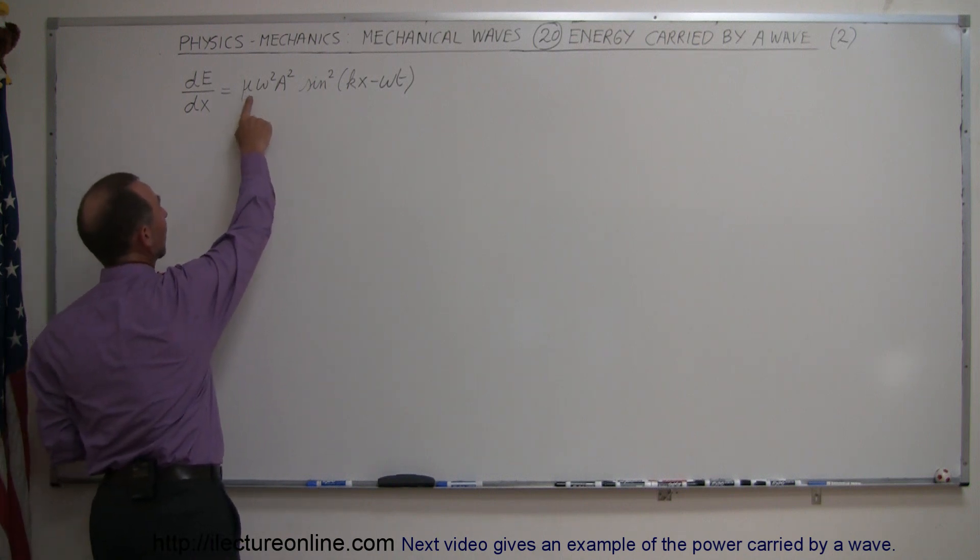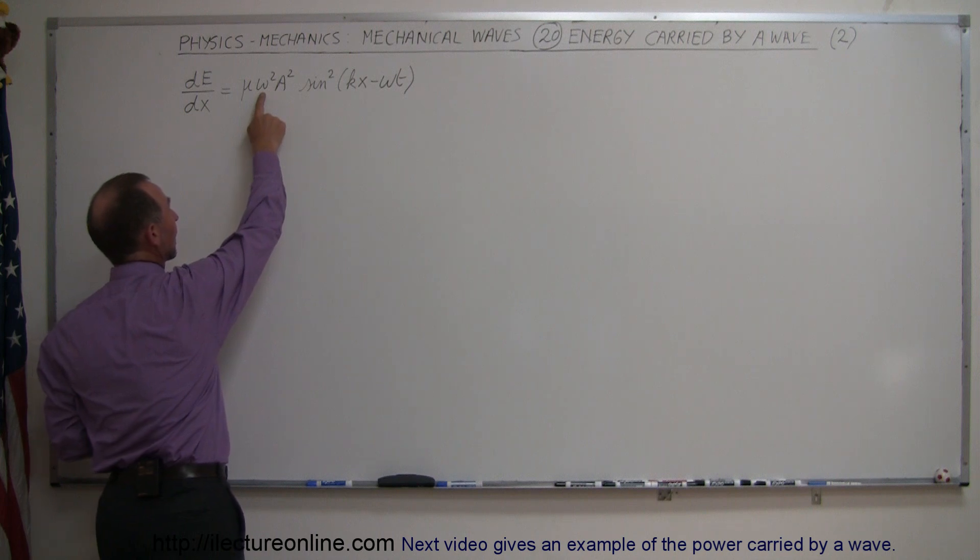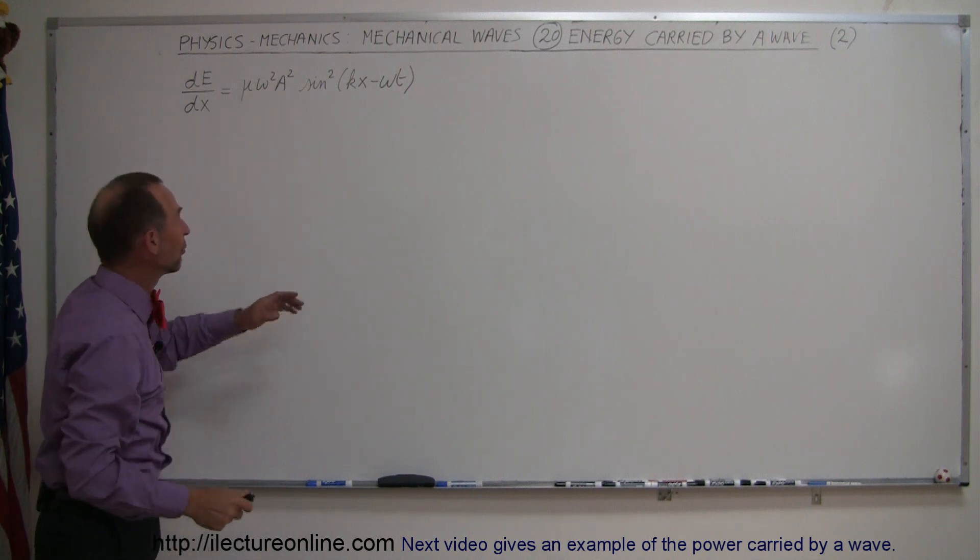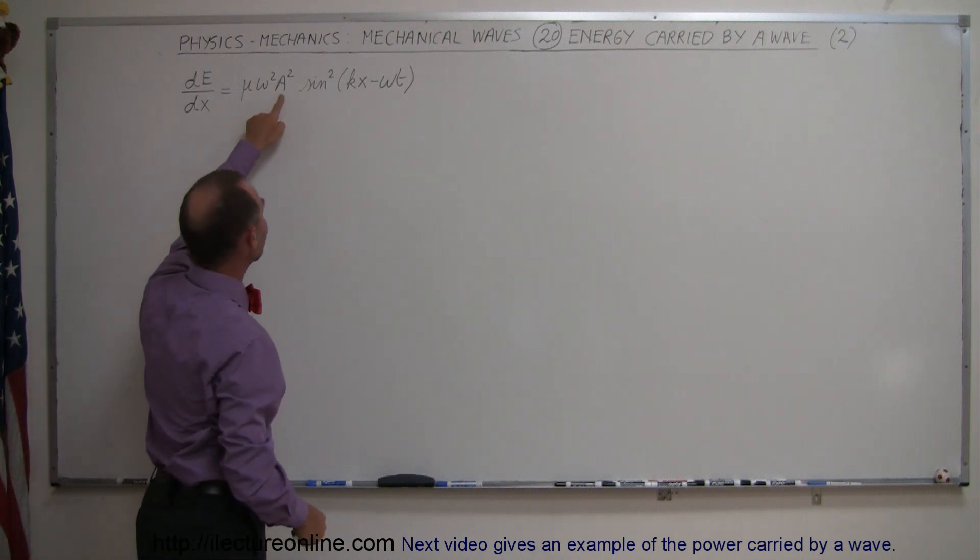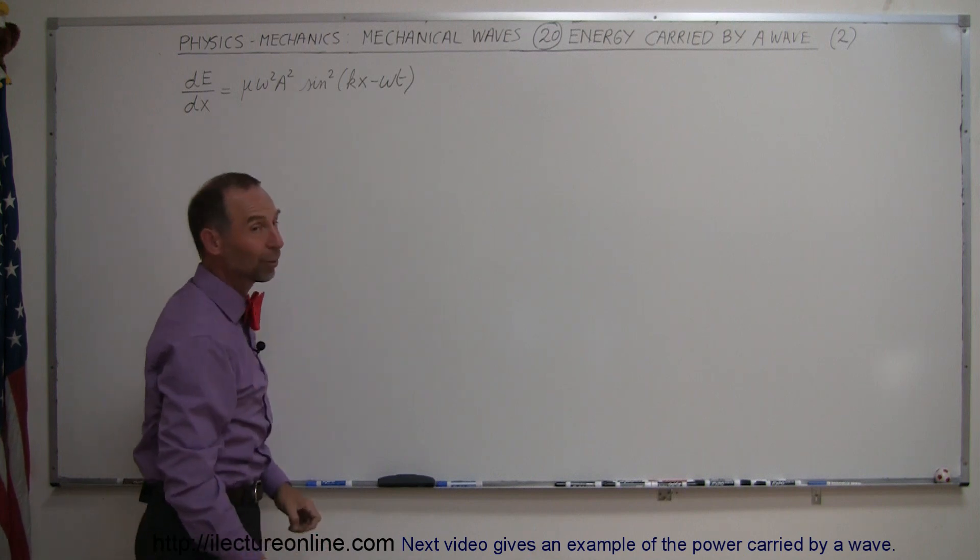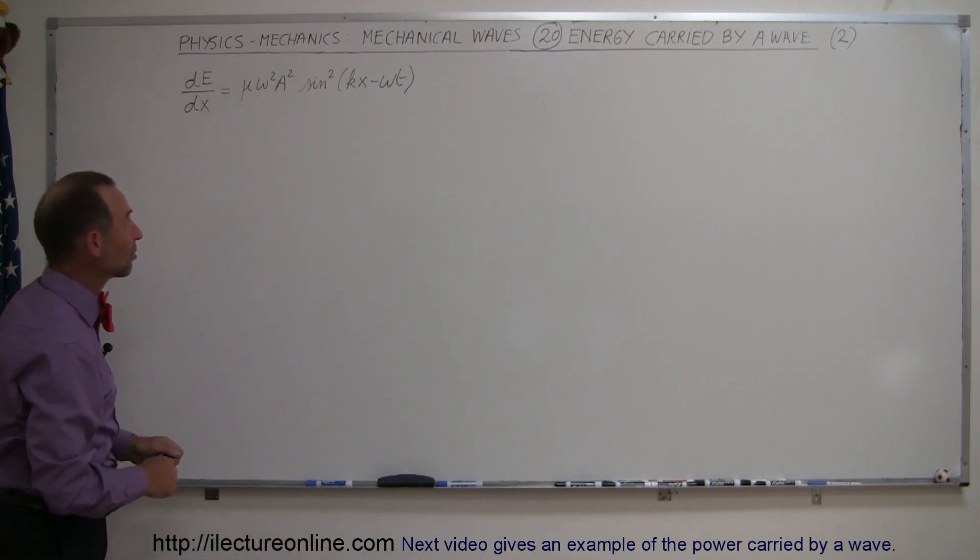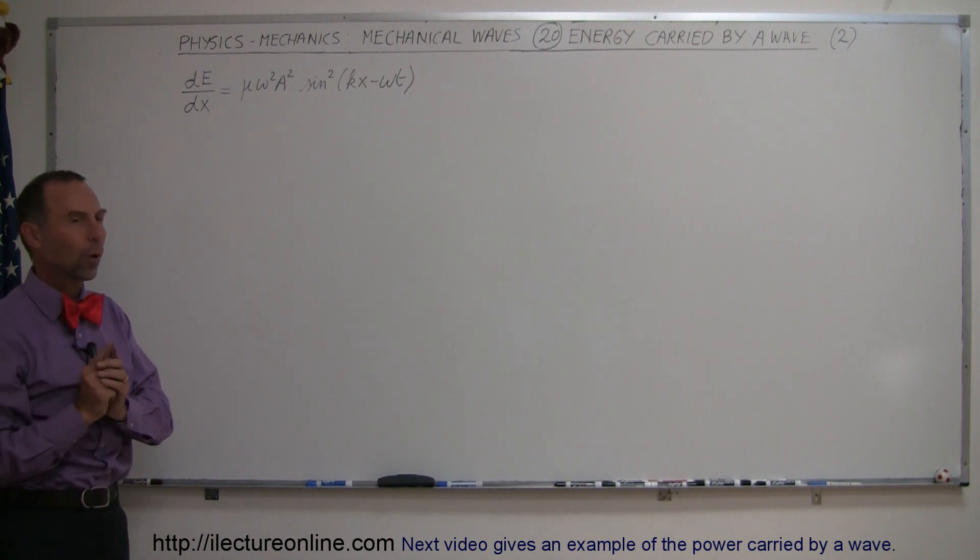Notice that's the mass per unit length, that's the frequency or angular frequency of the oscillation, that's the amplitude of the oscillation, and of course that's a recognizable sine function that describes the equation, but it's a sine function squared.